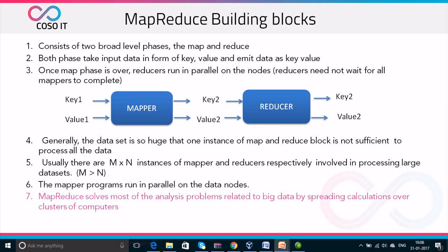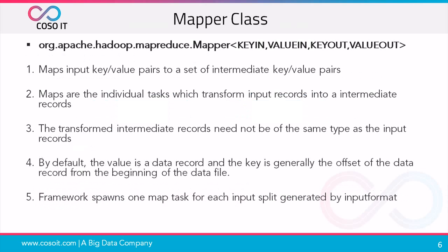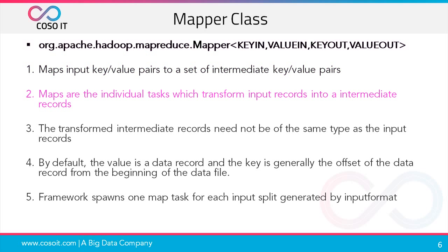MapReduce solves most of the analysis problems related to big data because it can spread calculations over clusters of computers. To devise a solution in MapReduce, divide the task into two phases: the Mapper and the Reducer. A typical MapReduce program has three main components: a Driver class, a Mapper class, and a Reducer class. The Mapper class extends classes from package org.apache.hadoop.mapReduce. It maps input key-value pairs to a set of intermediate key-value pairs. Maps are individual tasks which transform input records into intermediate records, and the transformed intermediate records need not be of the same type as the input records. By default, the value is a data record and the key is generally the offset of the data record from the beginning of the data file.